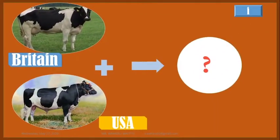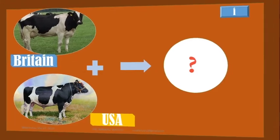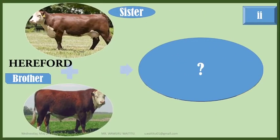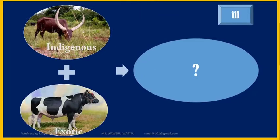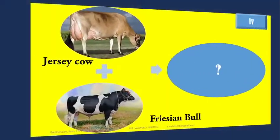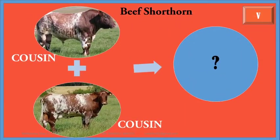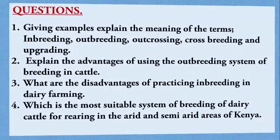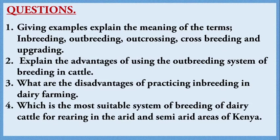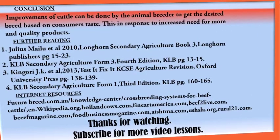We have looked at the systems of breeding in cattle. Now identify the system used in a cross between: number one, a Friesian cow from Britain and semen of a bull from the USA; number two, two Hereford bull and cow from the same parents; number three, a Friesian bull and an indigenous cow; number four, a Jersey cow and a Friesian bull; number five, two beef shorthorns which are cousins. You may also attempt more questions from the same topic. If you encounter difficulties, discuss with a friend, ask your teachers, or email your questions.